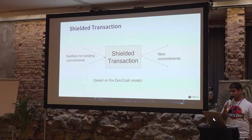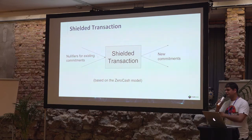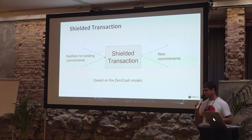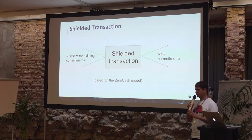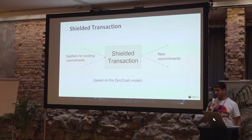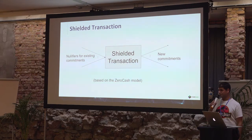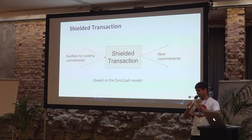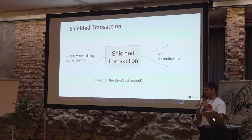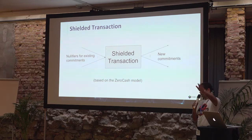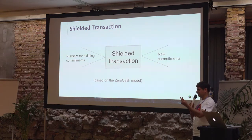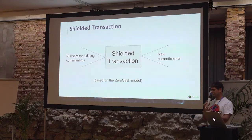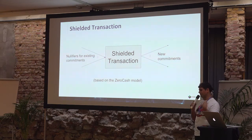The way to do it in zero knowledge is: when I want to transfer value, instead of saying, hey, I know this commitment with this value and this public key and hide the secret key — instead of doing all that, you are saying: hey, I know some commitment in this tree. You are giving the root of the tree, so you're saying, I know some commitment in this tree, and to this commitment I know the public key.